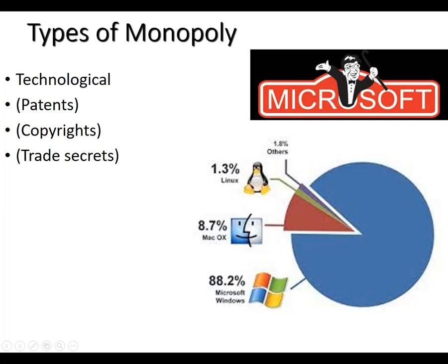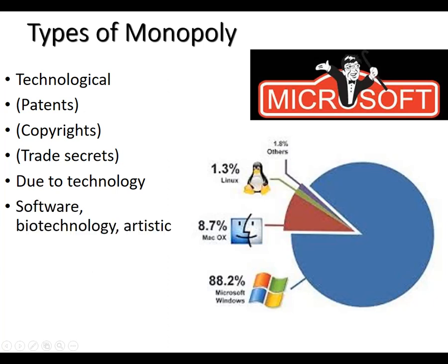Eventually patents and copyrights run out and enter the public domain, which Coke doesn't want — so Coke just keeps it as a secret recipe. For Microsoft, it's a little of both: they know what the software code is and you don't, and they also have patents and copyrights on the software. We see this a lot in software and biotech firms. The technological monopoly is sometimes thought of as the good kind of monopoly, because if we allow patents and copyrights we'll get more creation, more products, and more innovation for the consumer.